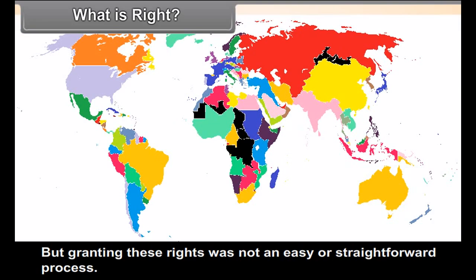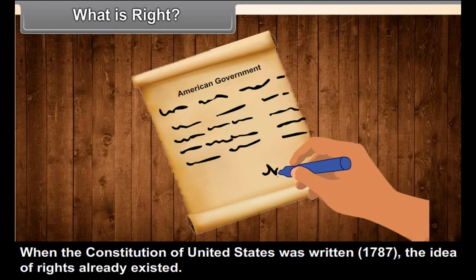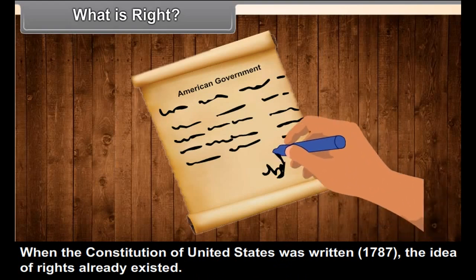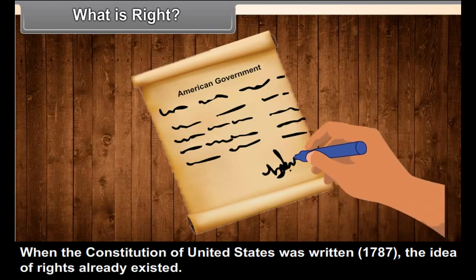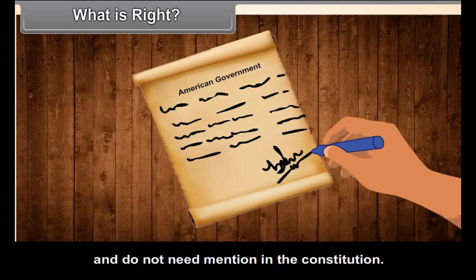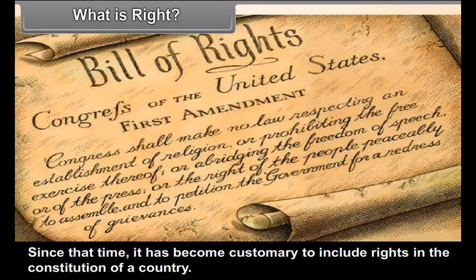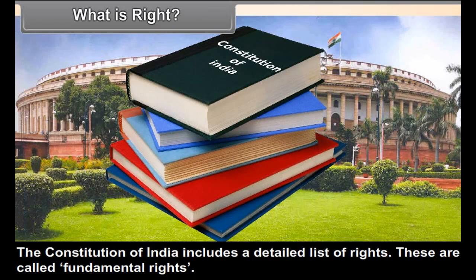But granting these rights was not an easy or straightforward process. In many countries, people engaged in struggles with their rulers for long periods before they could get their rights. When the Constitution of the United States was written in 1787, the idea of rights also existed. But that Constitution originally did not mention any rights because the makers felt that rights are already there and do not need mention in the Constitution. But on the demands of citizens, a Bill of Rights was subsequently included in the U.S. Constitution in 1791. Since that time, it has become customary to include rights in the Constitution of a country. The Constitution of India includes a detailed list of rights.